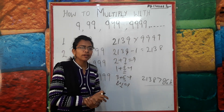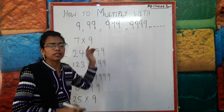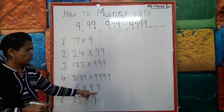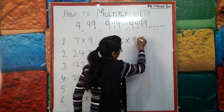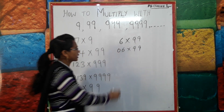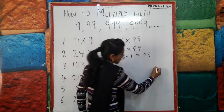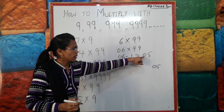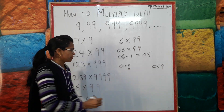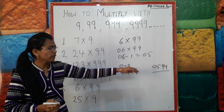Friends, now a new pattern: how do we multiply a single digit by double 99? For example, 6 × 99. First, write 6 as 06. Then do 06 minus 1 = 05. The first two digits of the answer are 05. Now take the first digit 0 and add 9 to get 9 — next digit is 9. Take digit 5 and add 4 to get 9 — last digit is 4. The final answer is 0594.